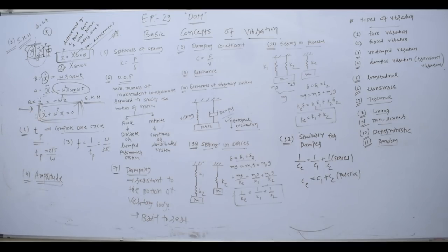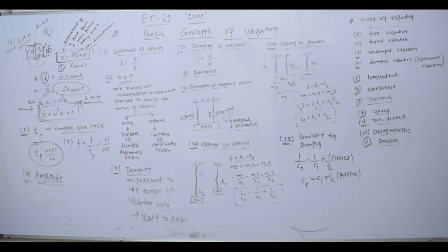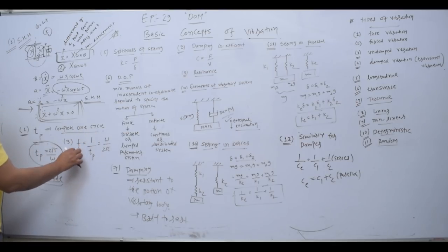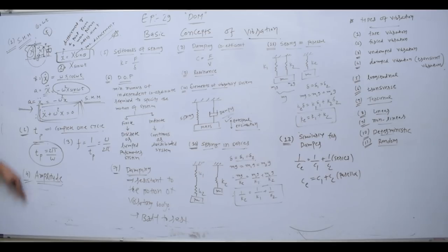After that, we will see time period — the time required to complete one cycle. Time period T equals 2π upon ω. Frequency is the number of cycles repeated per unit time, so frequency equals 1 upon time period, which is ω upon 2π. Then amplitude: the maximum displacement from the mean position is called amplitude.